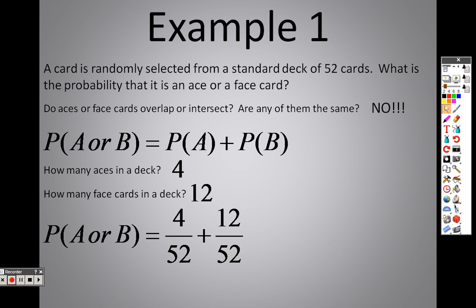No. There is no intersection because there are no aces that are face cards. Since there aren't any aces that are face cards, then there's nothing I take out. I simply just add them together. 16 over 52, which reduces to 4 over 13, which is 30.8%.